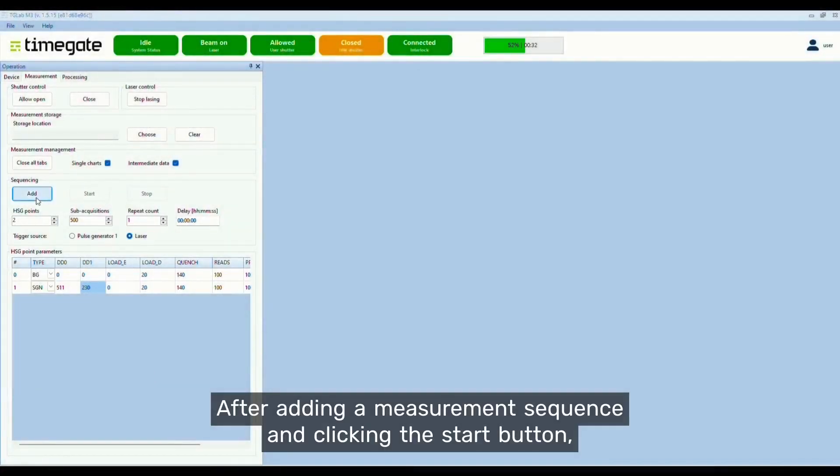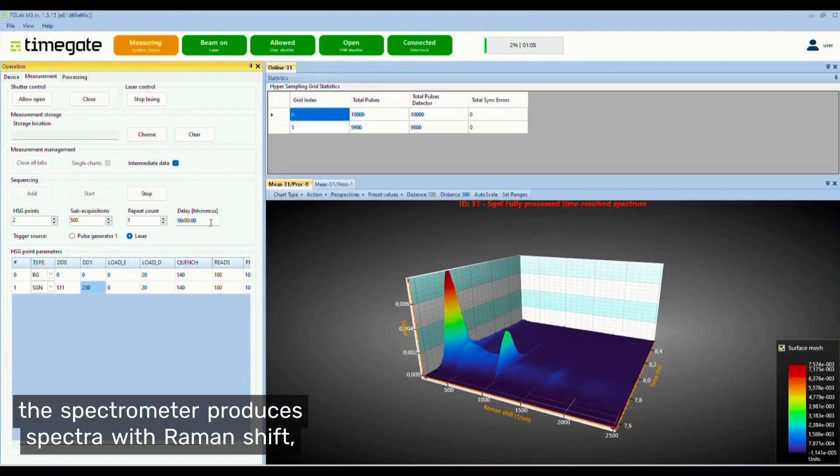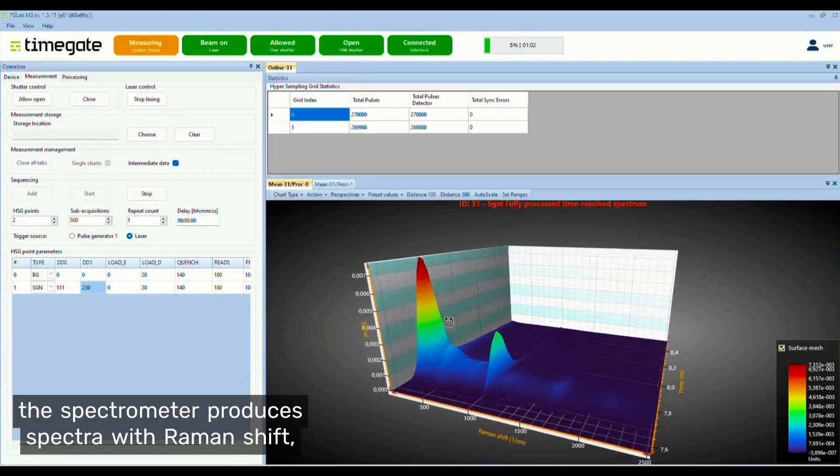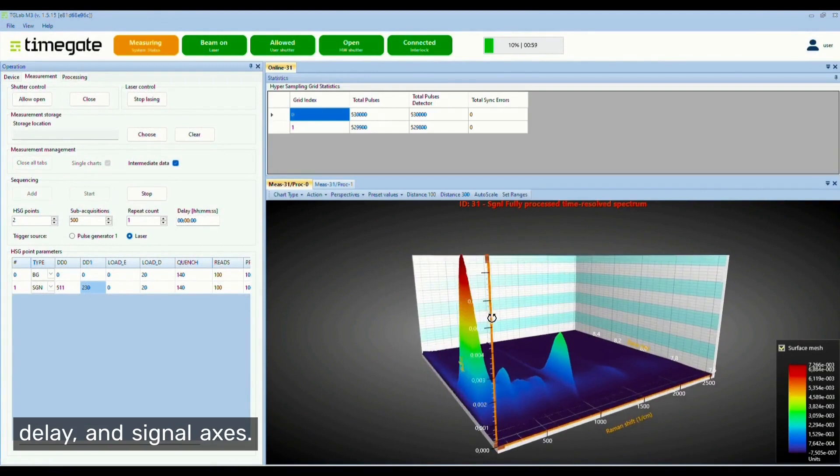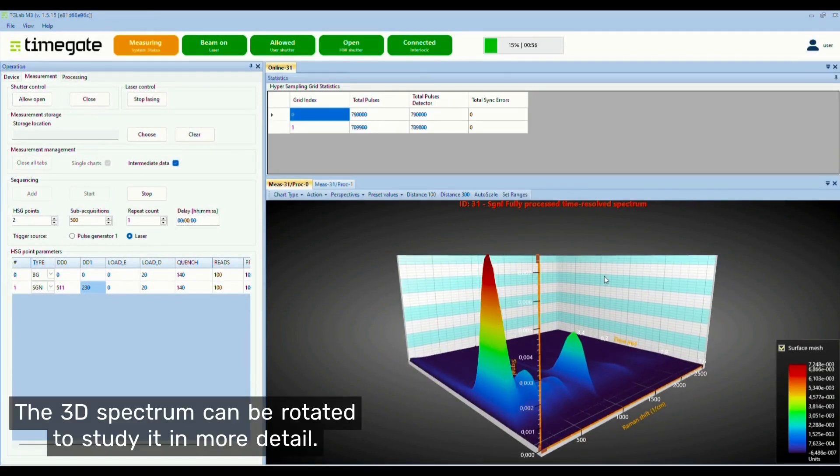After adding a measurement sequence and clicking the start button, the spectrometer produces spectra with Raman shift, delay, and signal axis. The 3D spectrum can be rotated to study it in more detail.